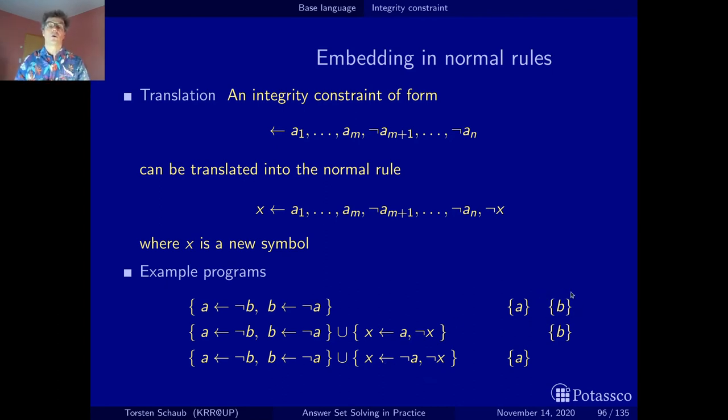and the stable model that only contains b is destroyed or eliminated. What we get is only the stable model with a, because if we have a, well then this body literal is not satisfied, so the odd loop is not invoked,